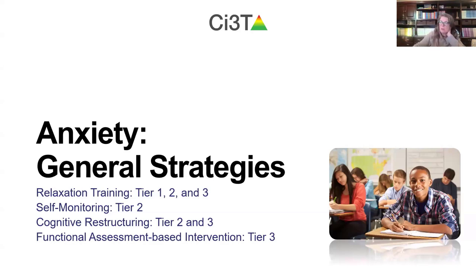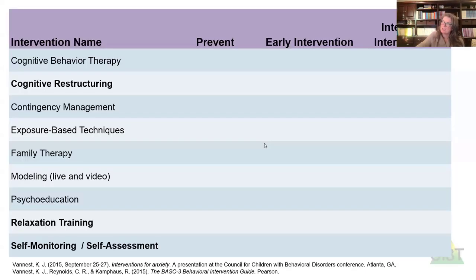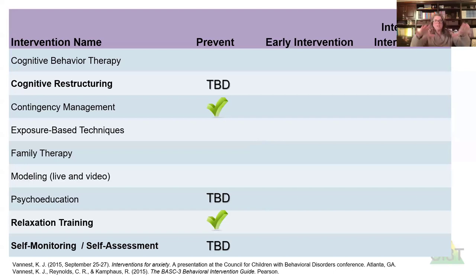So we're going to talk about how we can address internalizing issues across the tiers: relaxation training that could be done for all, for some, or for a few; self-monitoring as a tier two intervention; cognitive restructuring that can show up first as tier two and then tier three; and functional assessment-based interventions. We want to have some interventions designed to prevent challenges from occurring — your tiered system, whether CI3T or a straight PBS tier, has things at tier one like teaching kids strategies they can use to maintain calm.